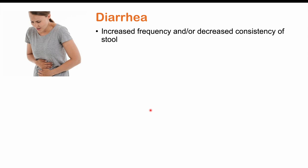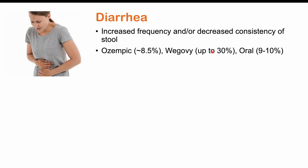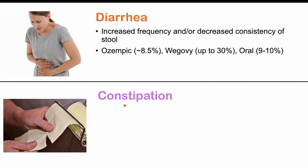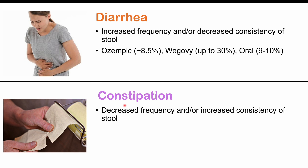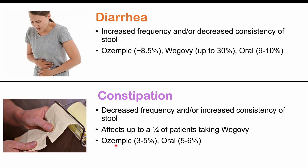Diarrhea — increased frequency and/or decreased consistency of stool — is another important adverse effect. Wegovy causes this in up to 30% of patients. Constipation, defined as decreased frequency and/or increased consistency of stool, can also occur, and sometimes diarrhea and constipation alternate in the same patient. Constipation affects up to a quarter of patients on Wegovy, with lower rates for Ozempic and Rybelsus.